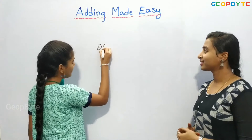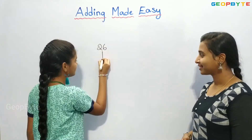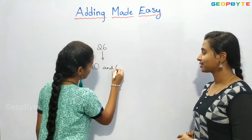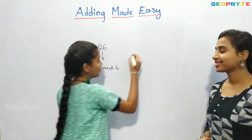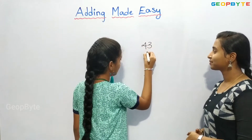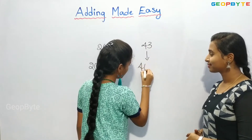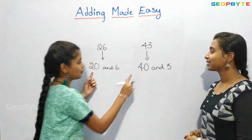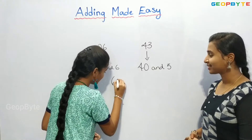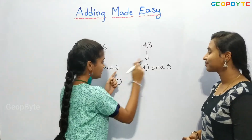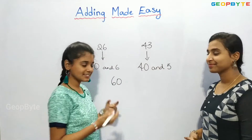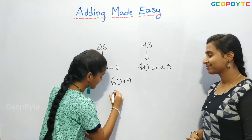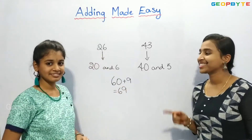Let us divide 26 into 20 and 6, and 43 into 40 and 3. 20 plus 40 is 60, plus 6 plus 3 is 9. 60 plus 9 is 69. Yes, you understood.